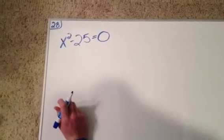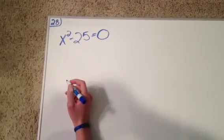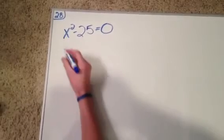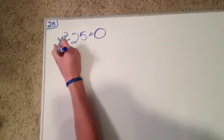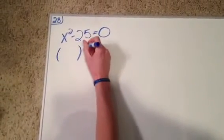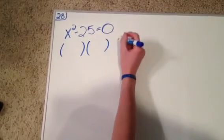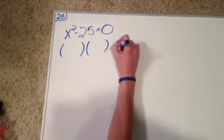We have our polynomial, and we are going to solve by factoring. We have to come up with an equation that will leave us with x squared minus 25 equals 0.